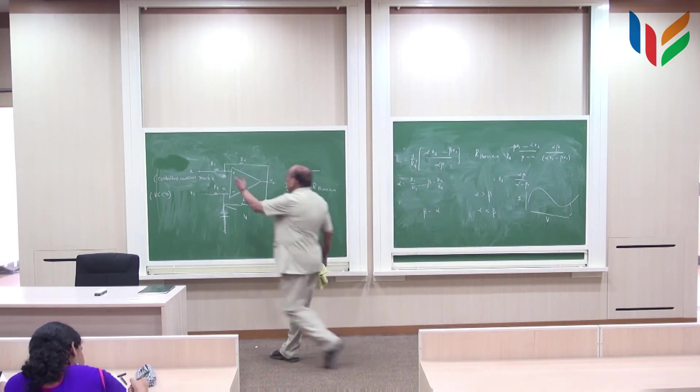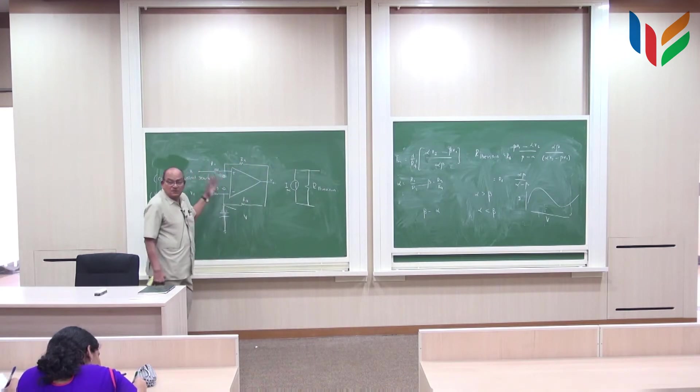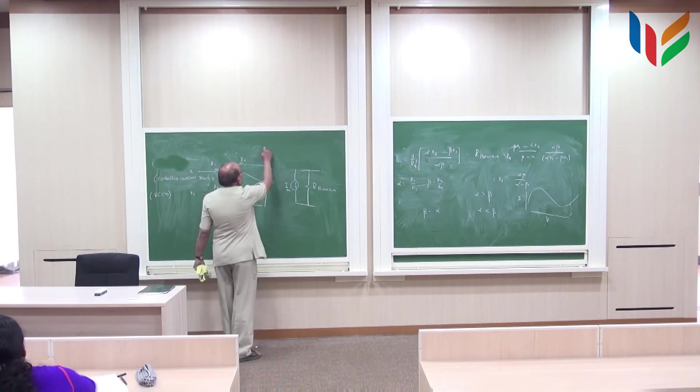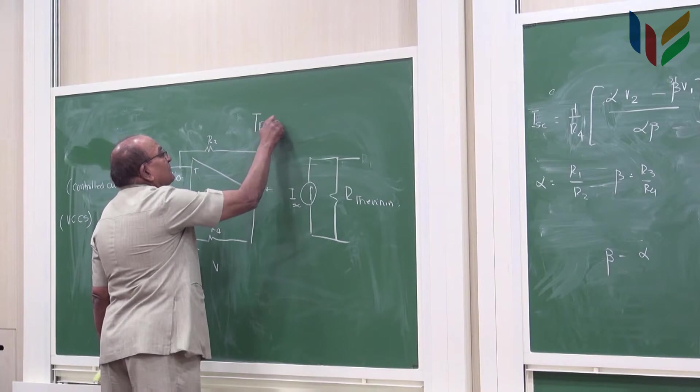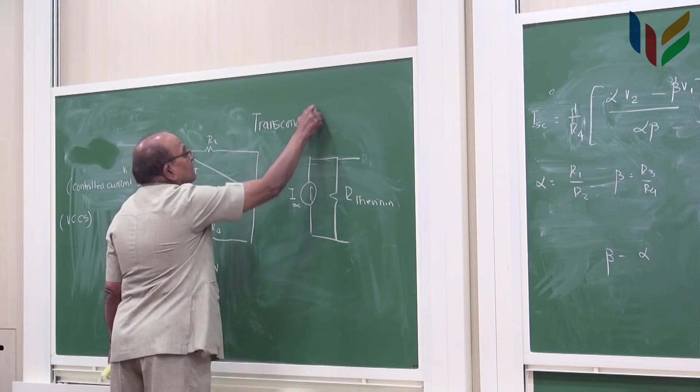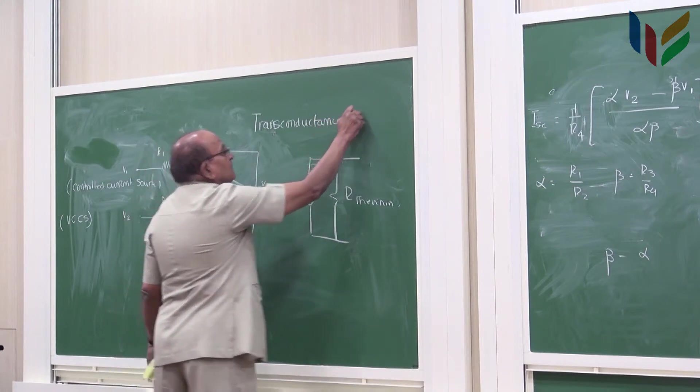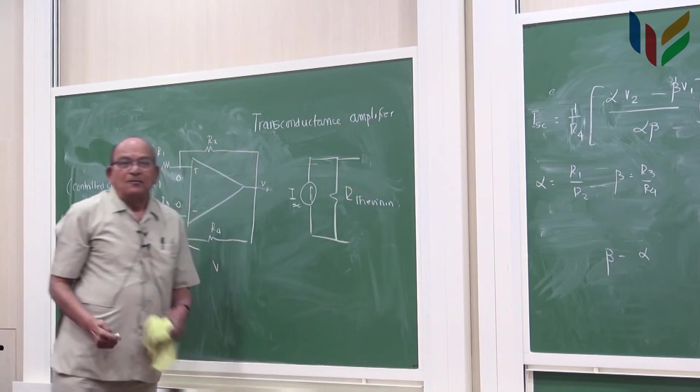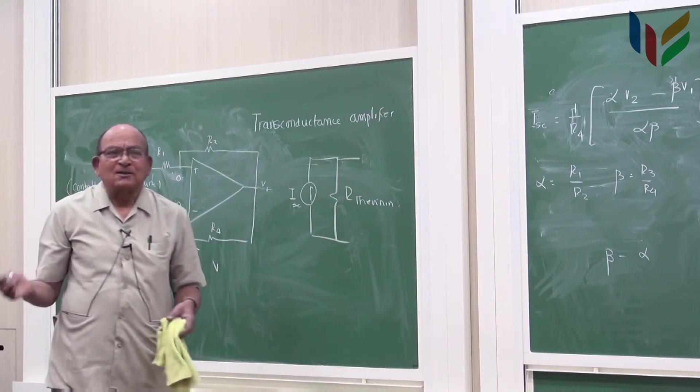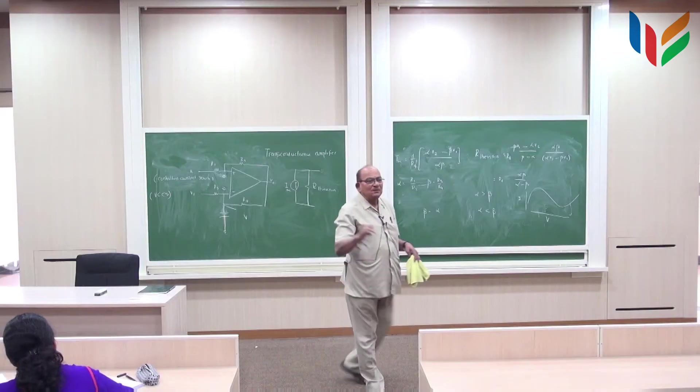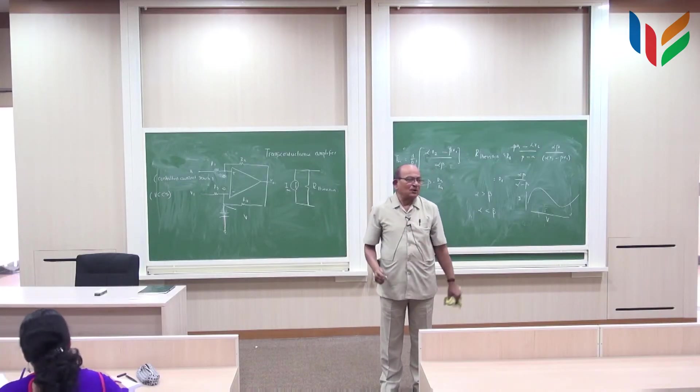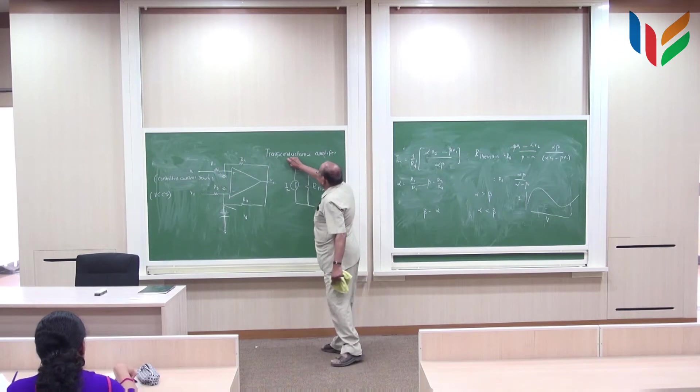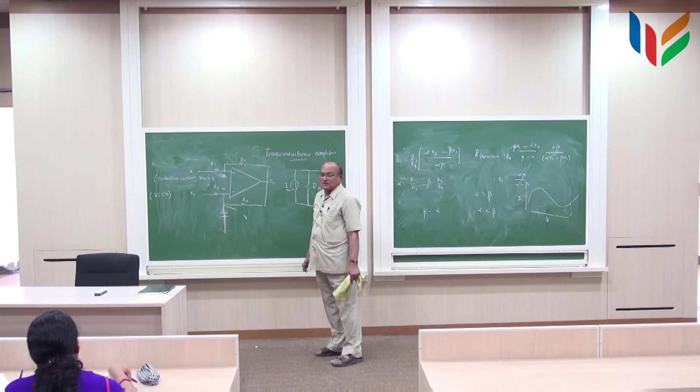This is a voltage controlled current source. You can make V1 zero, V2 zero, or whichever way you want to get the current controlled. Sometimes this is also known as transconductance amplifier, because VCCS is nothing but a transconductance—voltage converted to current. So there is a transconductance which converts the voltage to a current, or mutual admittance whichever way you want to call it.